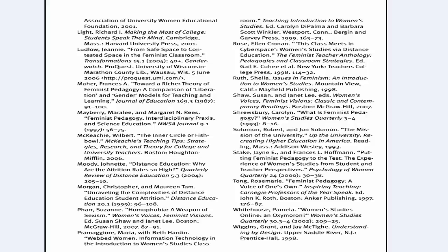Bibliographies are a great place to find sources to use in your research and writing. The first step to using a bibliography to find sources is to determine what kind of source you need. Do this by looking for clues in the citation.